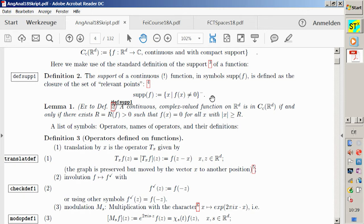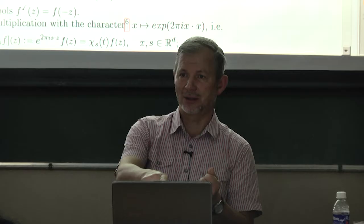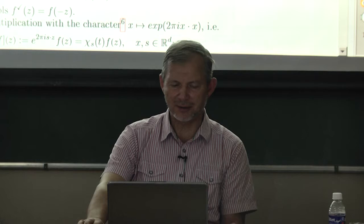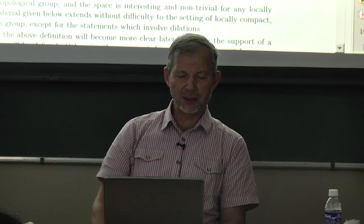There is a distinction between the analytic and numerical viewpoints. The support of a function is the closure of the set of interesting values. Later we will have a notion of support of a distribution. When we define the support of a generalized function we always get a closed set, so for consistency that is why we put a closure here. You can accept it as a definition.